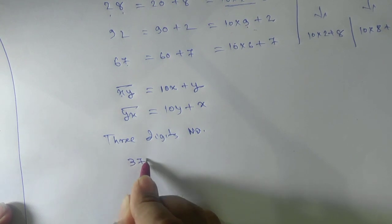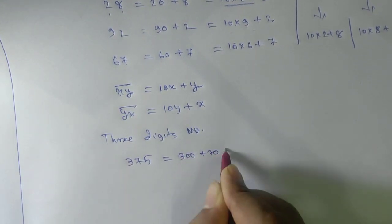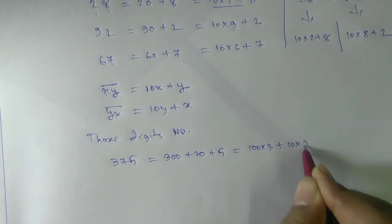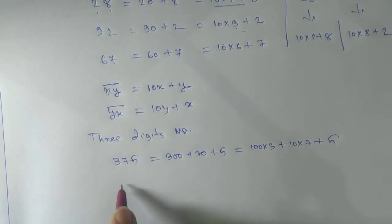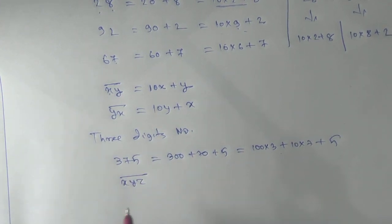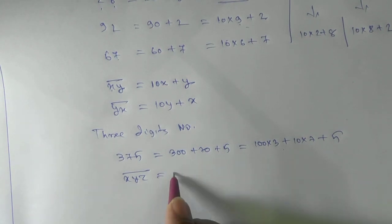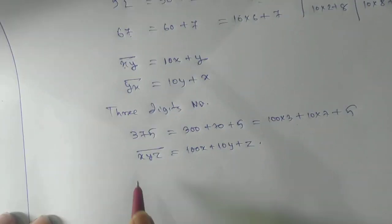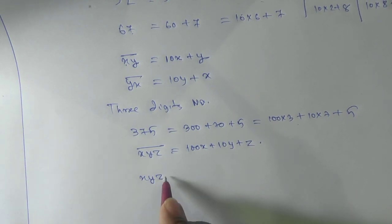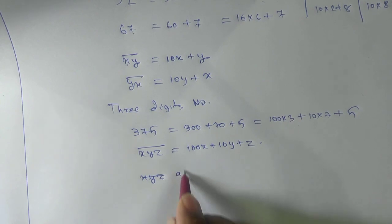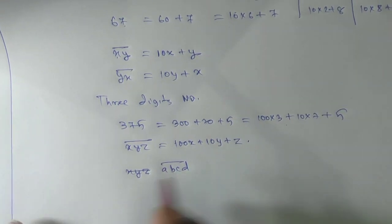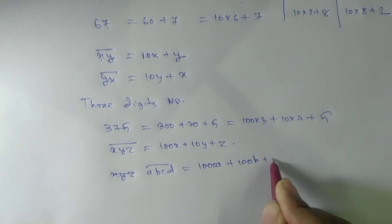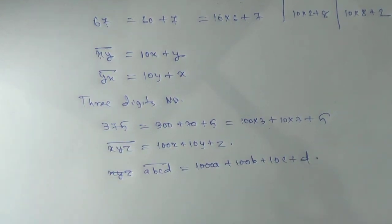For a three-digit number, take 375: this is 300+70+5, or 100×3 + 10×7 + 5. So the general form of XYZ̅ is 100X + 10Y + Z. For a four-digit number ABCD̅, this extends to 1000A + 100B + 10C + D. This is the general form.